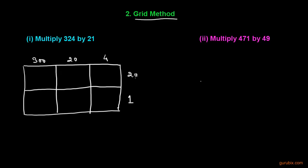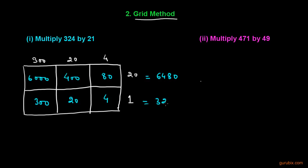Now we start filling the boxes. We multiply 300 by 20 to get 6000; 20 by 20 gives 400; 4 by 20 gives 80. Adding these numbers in the boxes gives 6480. Then we multiply 300 by 1 to get 300; 20 by 1 gives 20; and 4 by 1 gives 4.